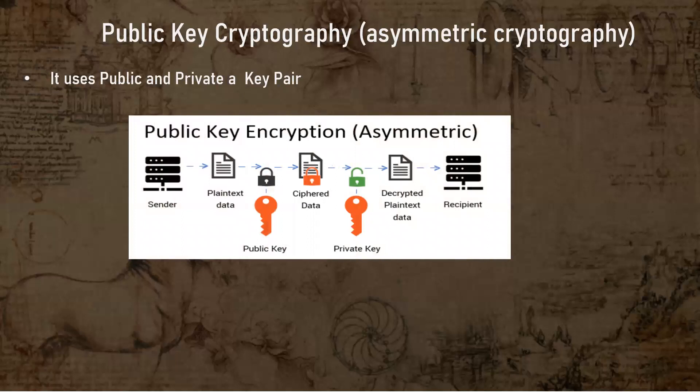As you can see in the picture, there is a sender and there is a recipient. The sender sends plain text data, and then there is a public key in between — this public key encrypts your data, converting it to cipher data. When it reaches the recipient, a private key decrypts your data. In our example, the sender is your browser and the recipient is your XYZ bank server. Data transfers from your browser to the XYZ bank server and back, and in between the data is encrypted and decrypted at both ends with the help of the public key and private key.